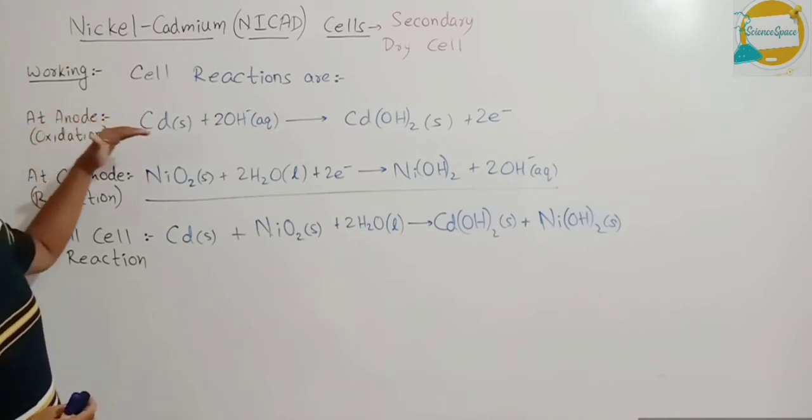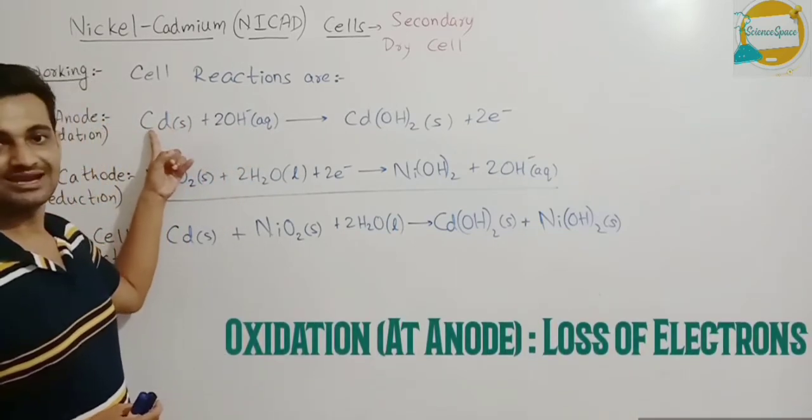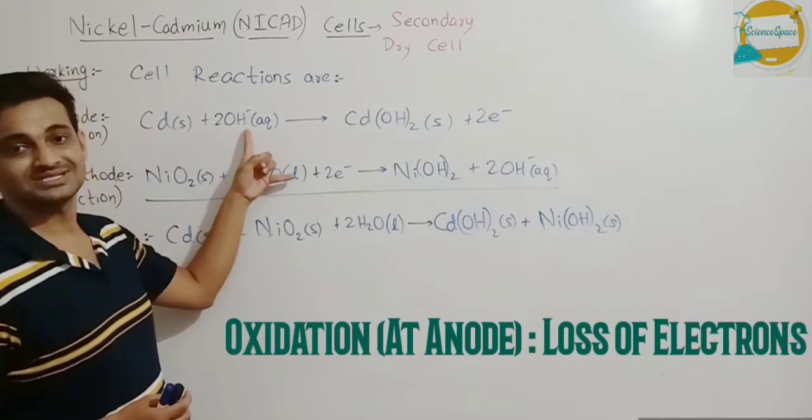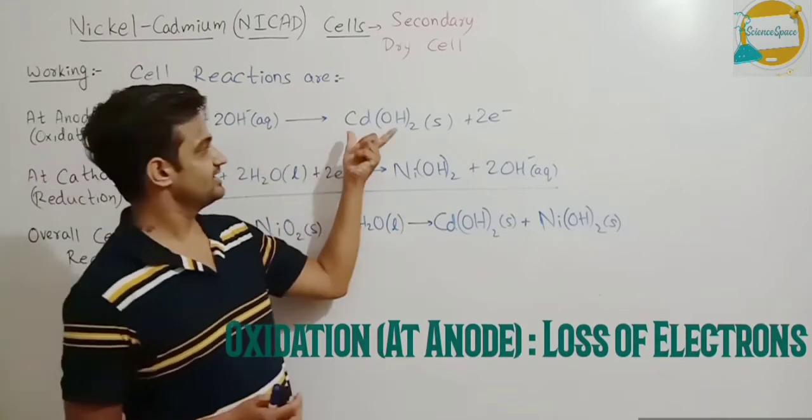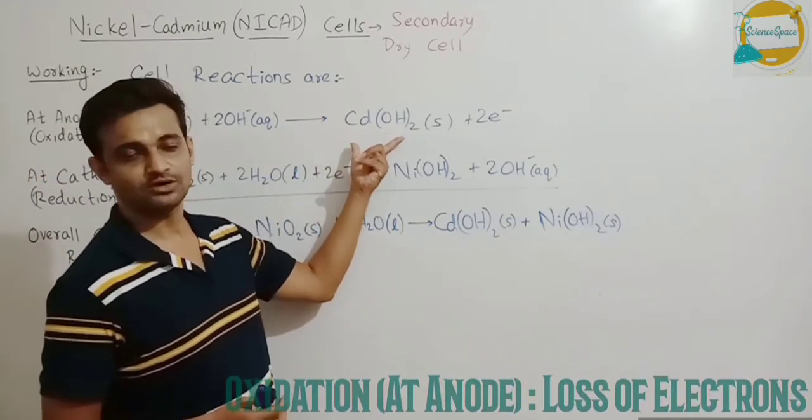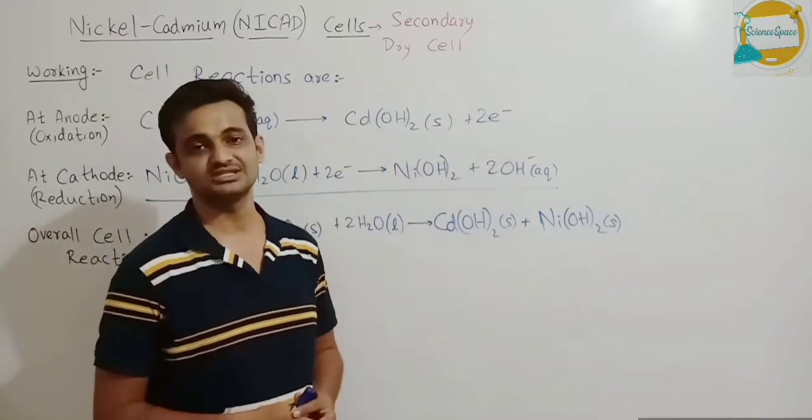So at anode as part of oxidation the cadmium electrode and hydroxyl ions, OH negative ions from the electrolyte, these two will combine and it will form cadmium hydroxide that is Cd(OH)2 and two electrons will be released in this process. So loss of electrons is called oxidation.